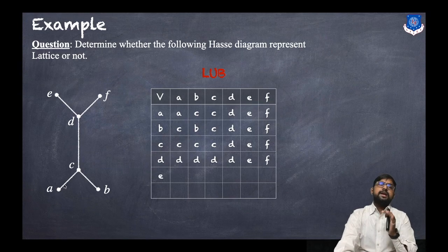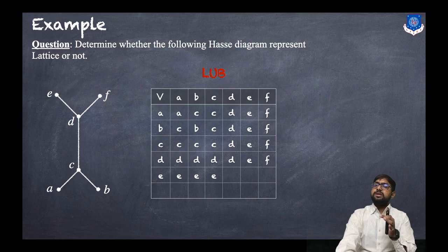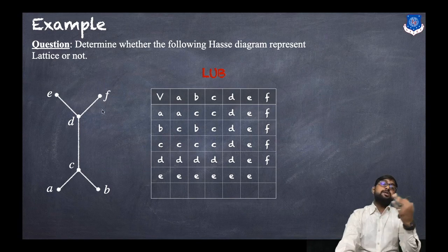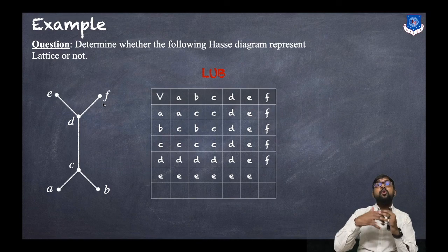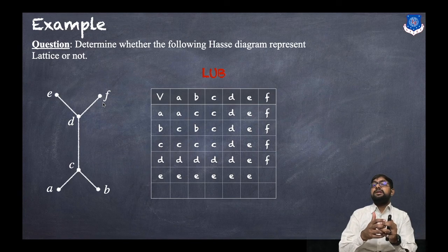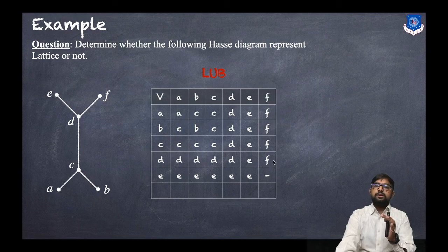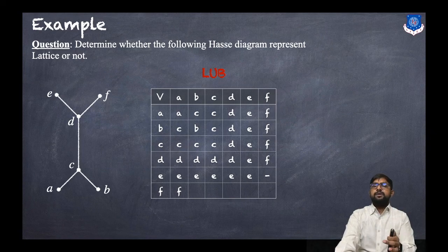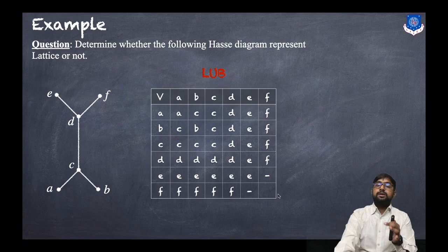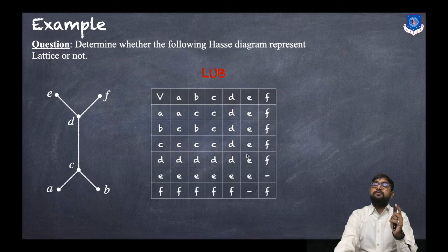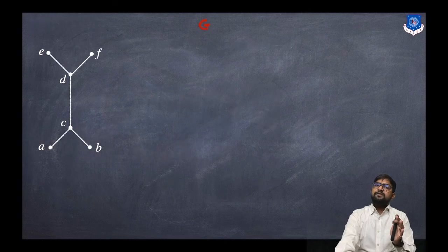For row e: LUB(e, a) = e; LUB(e, b) = e; LUB(e, c) = e; LUB(e, d) = e; LUB(e, e) = e. Now LUB(e, f) — as you can see there is no upper bound for e and f, so there is no least upper bound. We put a dash. For row f, all entries are f except LUB(f, e) which is also a dash. So in the LUB table, there is one pair (e, f) that does not have a LUB.